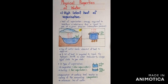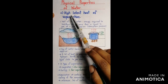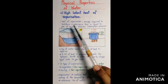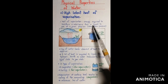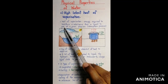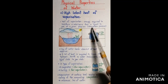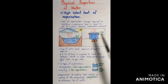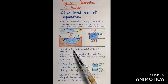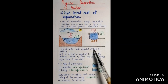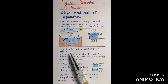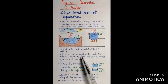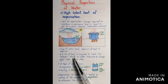Water also has high latent heat of vaporization. Heat of vaporization means the energy required to transform a substance from liquid to gas at a given pressure, most likely atmospheric pressure. One kg of water needs 2260 kilojoules of heat to vaporize, because a lot of heat is required to break the hydrogen bonds in water molecules to change from liquid state to gas state.